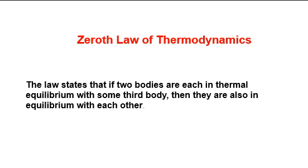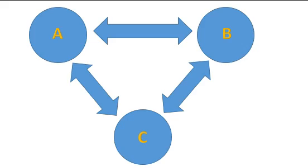Let's understand this with an example. Here we can see that body A is in equilibrium with body C. So we can say that the temperature of body A is equal to the temperature of body C, and hence there is no exchange of heat between A and C.